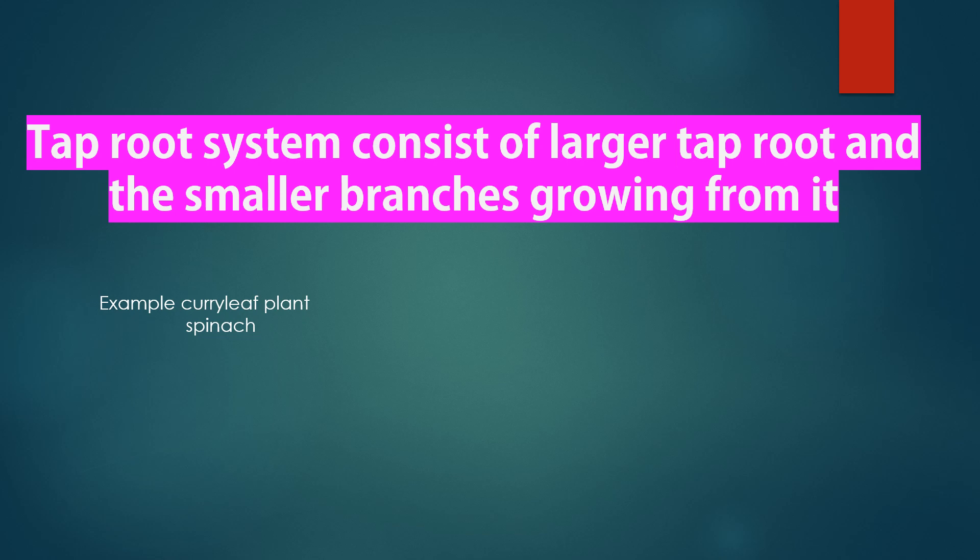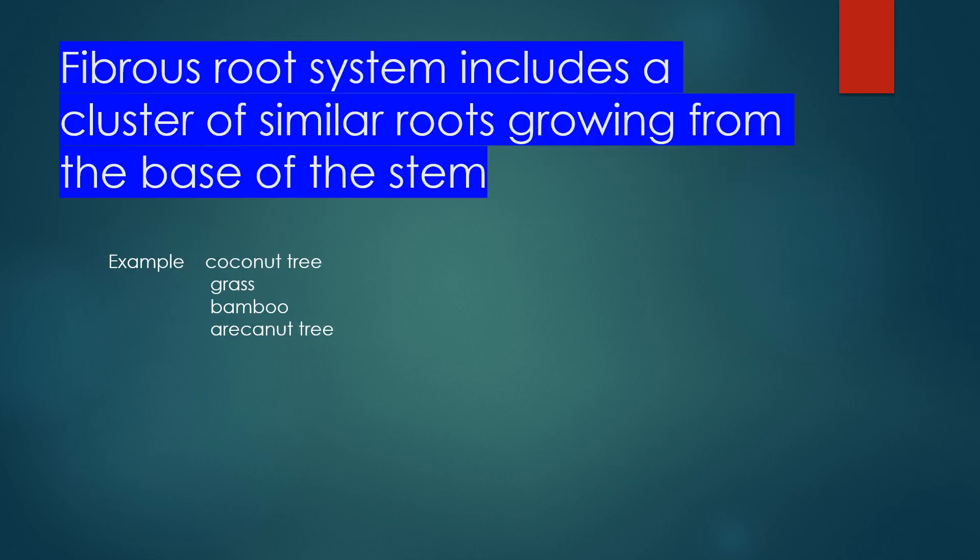Examples of tap root plants include curry leaf plant and spinach (cheera). The fibrous root system includes a cluster of similar roots growing from the base of the stem. The roots grow from the base of the stem and are similar to each other.